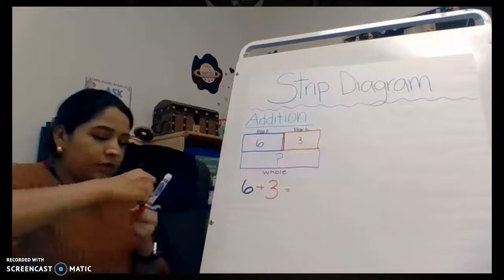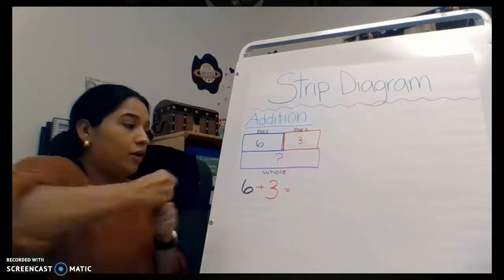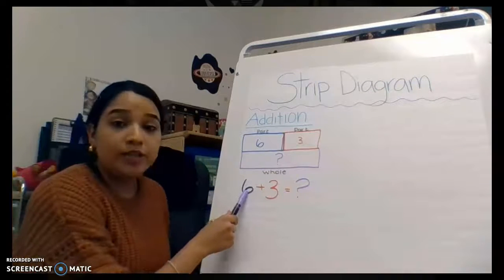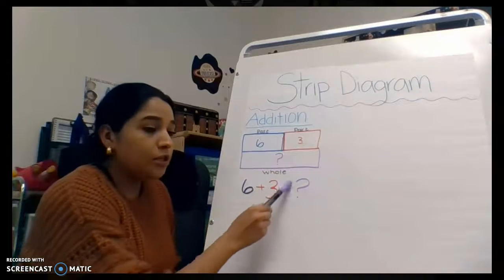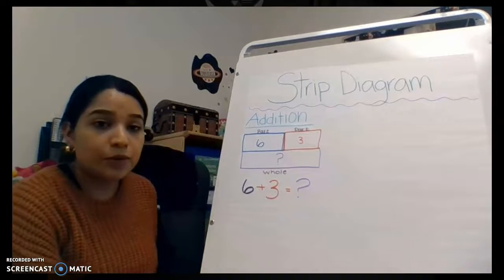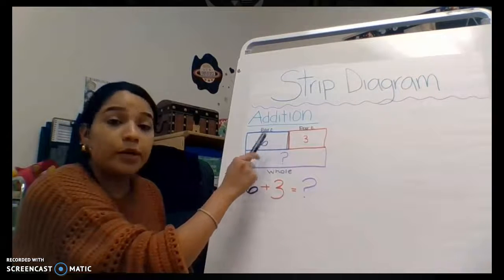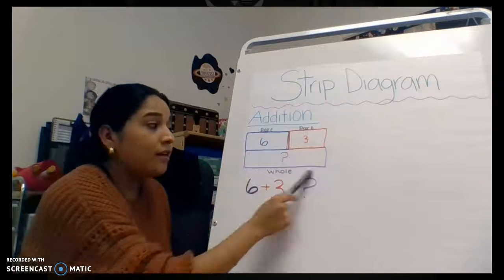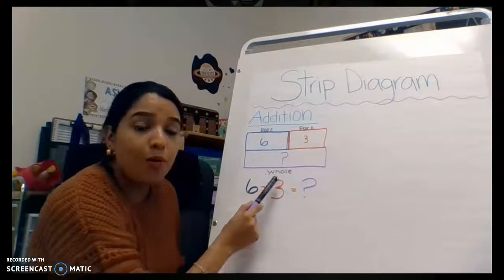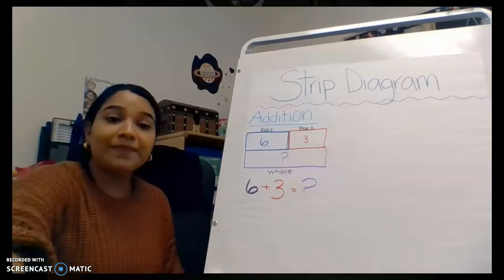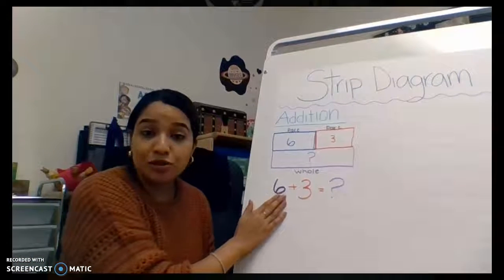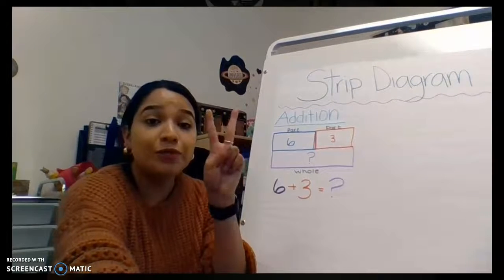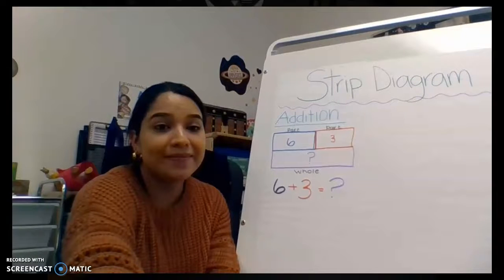Six blue birds plus three red birds equals our whole — question mark. We had six blue birds and three red birds and wanted to know how many birds are in the tree. Part plus part — six blue birds and three red birds — to figure out our whole. This is our addition strip diagram. Now you can click on video number two for today's assignment.